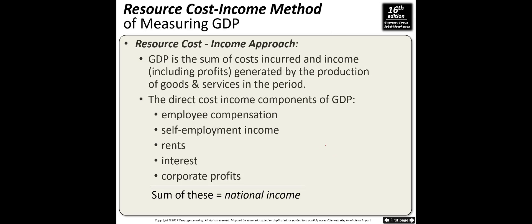The second way of calculating GDP is the resource cost-income approach. GDP is the sum of costs incurred and income generated by the production of goods and services in the period. The direct cost-income components are: employee compensation, which represents wages as income for labor; self-employment income for small businesses; rents as income for landlords; interest as income for capital; and corporate profits. All of these together represent national income.